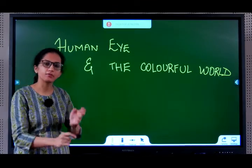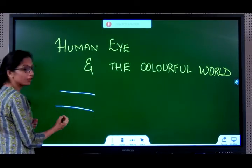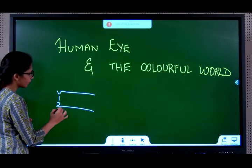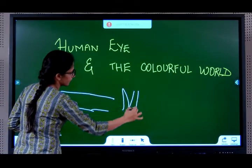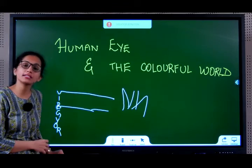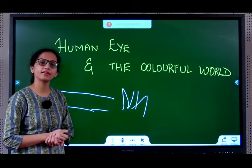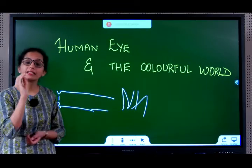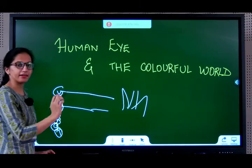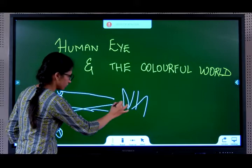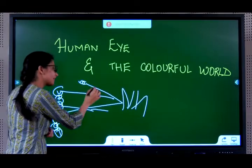Is the grass green because — in the previous chapter on light, we already studied that white light consists of seven colors. Now, white light is falling on the grass, but the grass is green in color. What is happening? The grass appears green because the grass absorbs all the colors except green. What happens to this green light? It hits and enters your eye. You can see it is green in color because the green light is entering your eye.